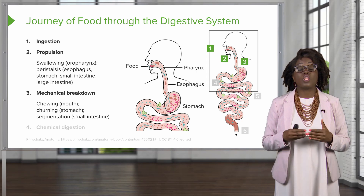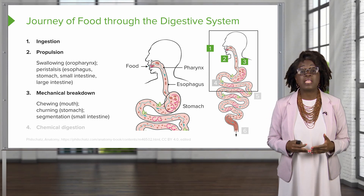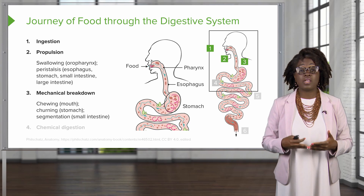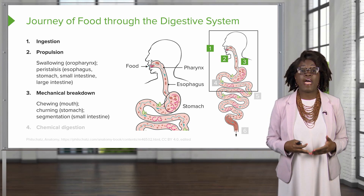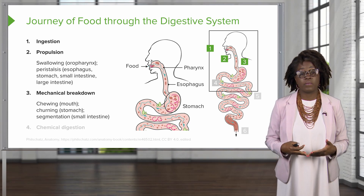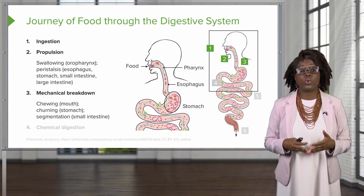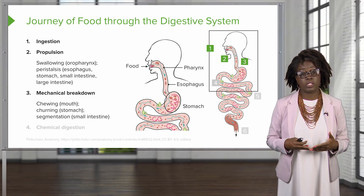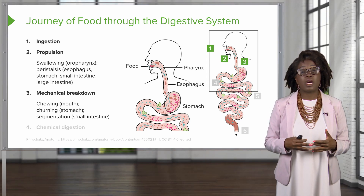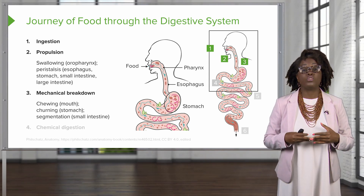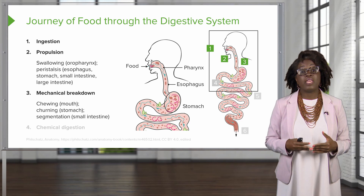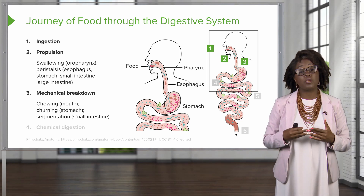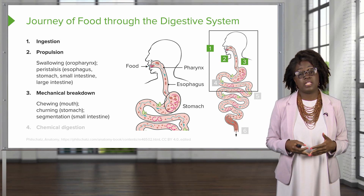Once we get into the lower parts of the GI tract, mainly the stomach, although some of this does take place in the mouth, we are going to have mechanical breakdown. Starting in the mouth, we are going to chew the food, which begins breaking it down into smaller parts. Once we get to the stomach, we are going to churn the food, and then once we get to the small intestine, we are going to mechanically break down the food using segmentation.